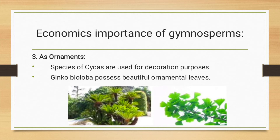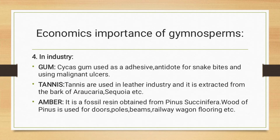Now, at the industrial level. First one is gum. Cycas gum is used as an adhesive, as an antidote for snake bites, and in treating malignant ulcers or tumors. So you can use them in making gums.